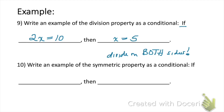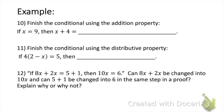Number 10: write an example of the symmetric property as a conditional. Hypothesis: if y equals 1. The symmetric property says we take both sides and swap them. So the conclusion is: 1 is also equal to y. Number 11: finish the conditional using the addition property. Hypothesis: if x equals 9, then x plus 4 equals blank. We added 4 to the left side, so by the addition property we add 4 to the right as well. 9 plus 4 gives us 13.